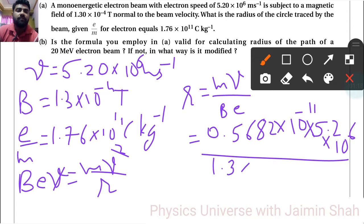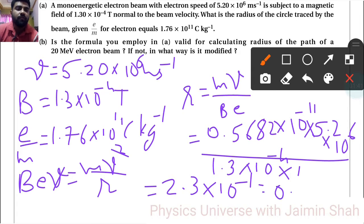This gives 5.2 divided by 1.3, which equals 2.3. So 2.3 × 10⁻¹¹ plus 6 plus 4 equals 10⁻¹. Therefore, R = 0.23 meters. That is the radius.